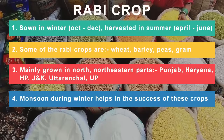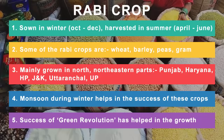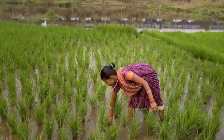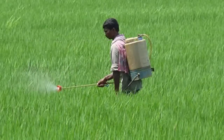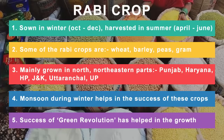India has two types of monsoon: the southwestern monsoon and the northeastern monsoon. The northeastern monsoon occurs during the winter season, and this rainfall helps in the success of Rabi crops. Due to the success of the Green Revolution — a period when Indian agriculture increased its yields due to improved agronomic technology — the growth of these Rabi crops was significantly boosted, helping overcome food deficits.